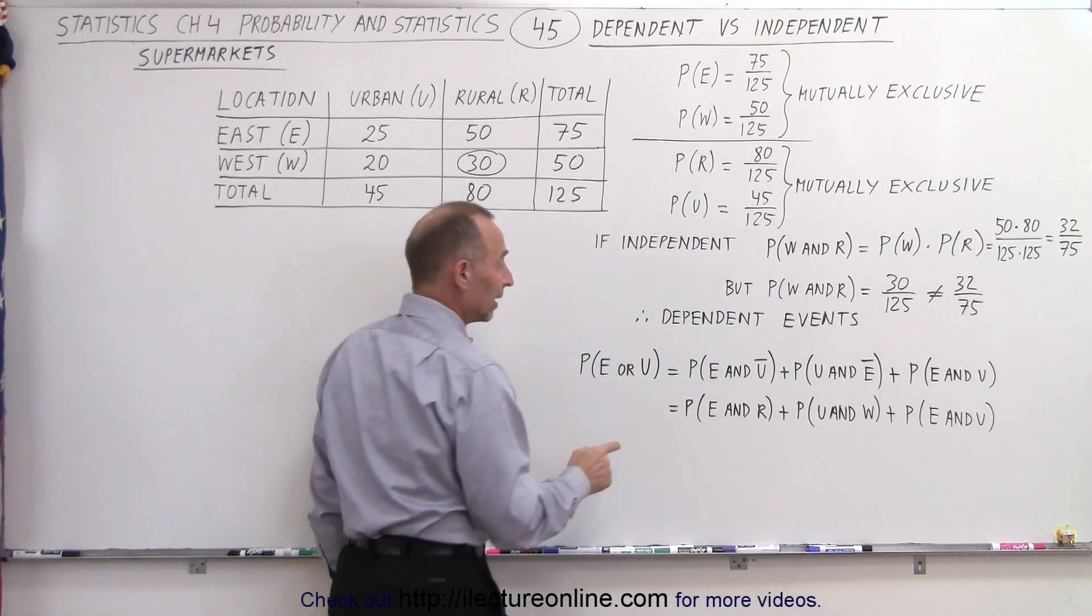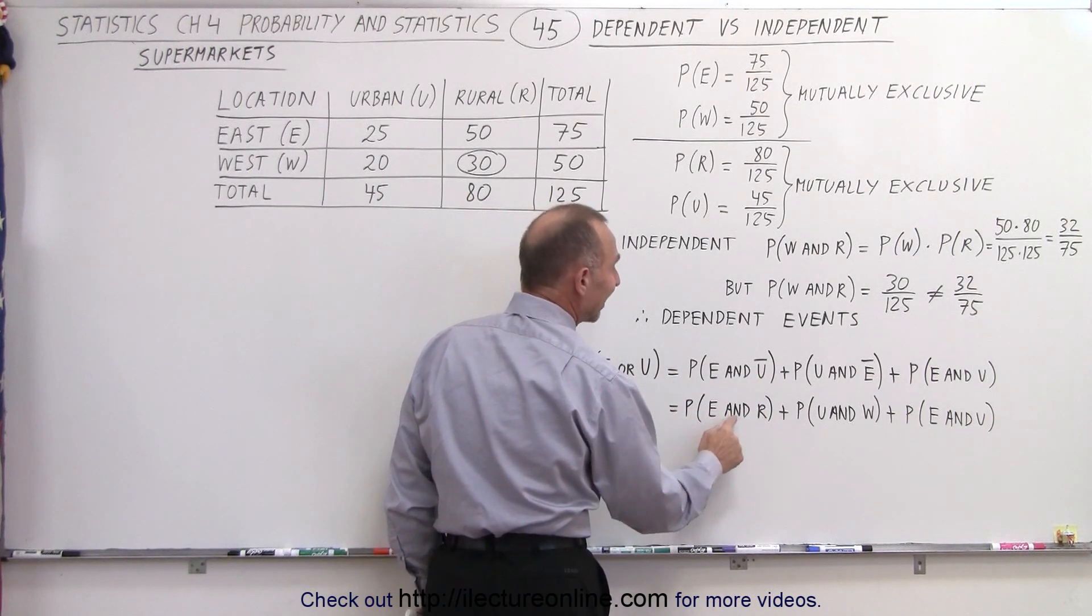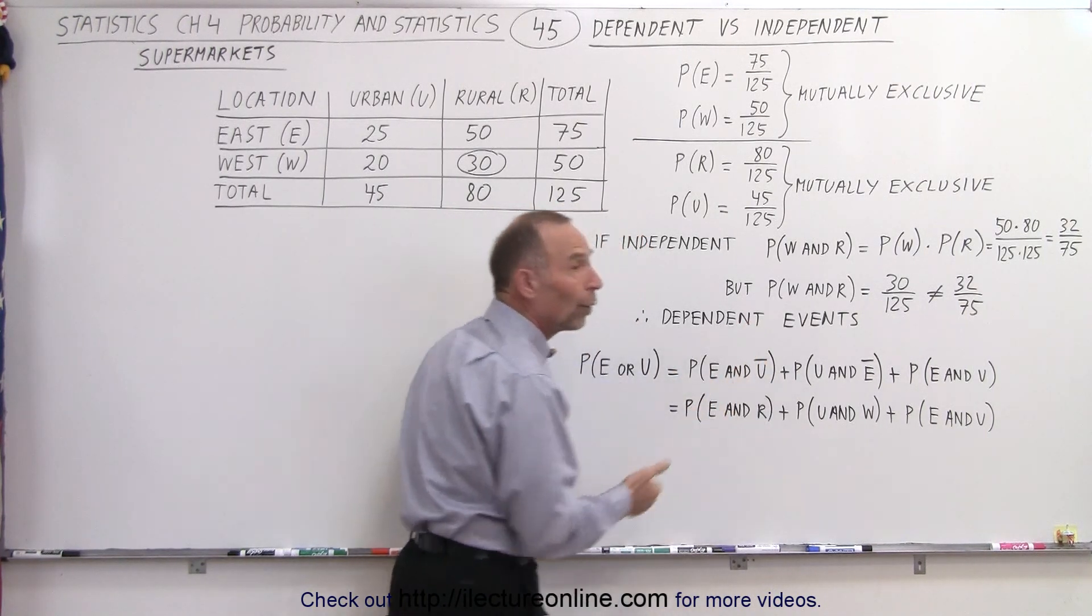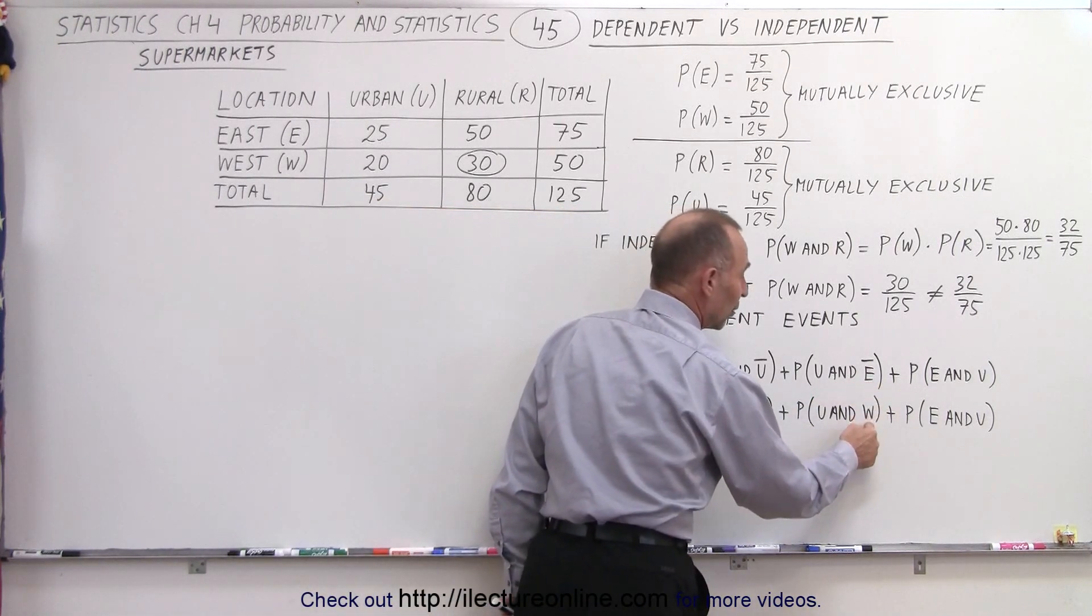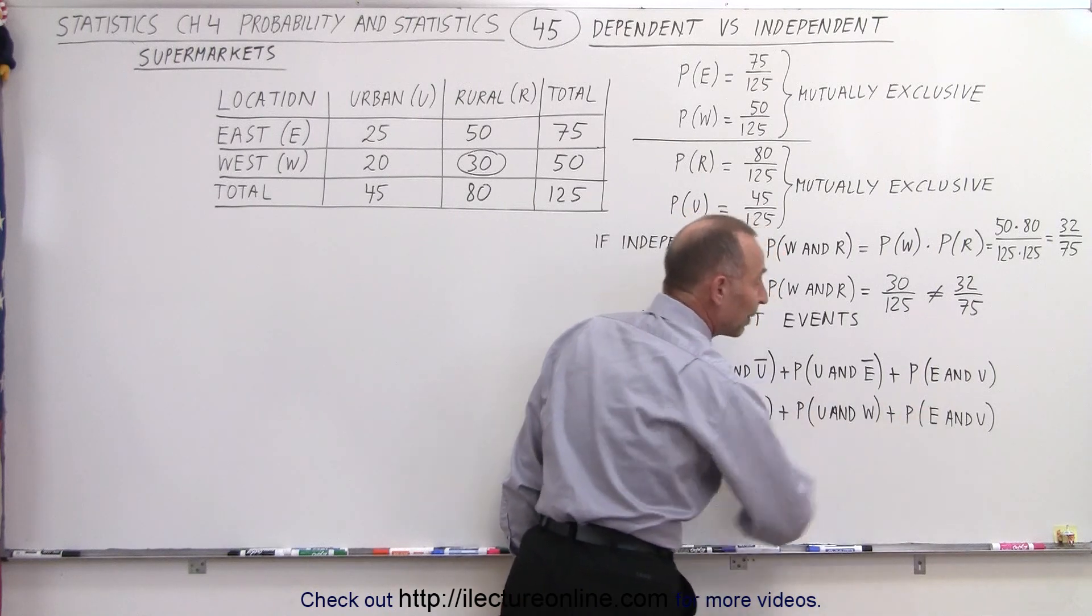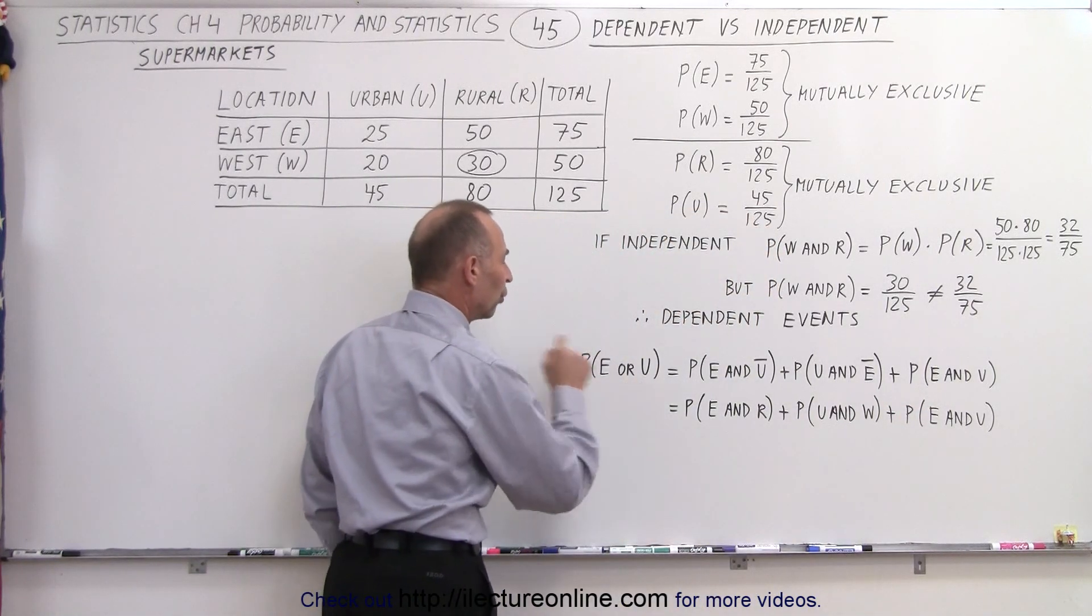Or you can say that if it's the probability of east and not urban, that means it's the probability of east and rural because there's only one other option. If it's not urban it must be rural and if it's not east it must be west. So if we add these three probabilities together we should then get the probability of east or urban.